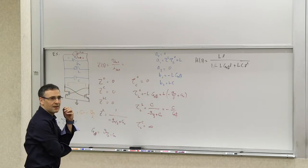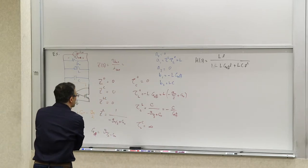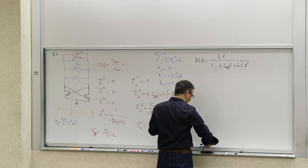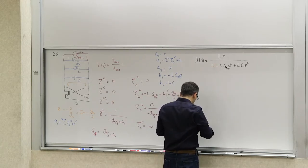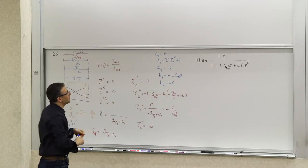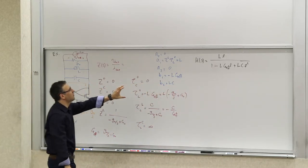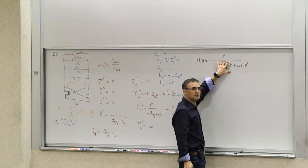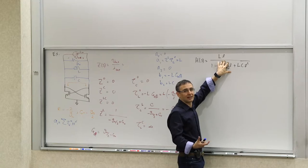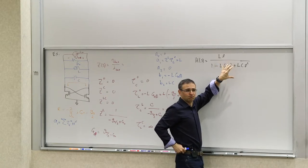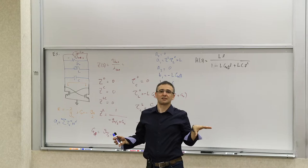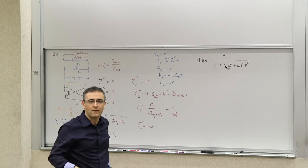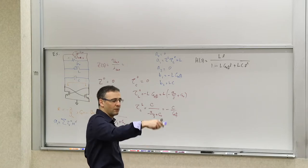What does this tell us? If that middle term were not there, you'd have LC in the denominator — a lossless resonator, like an ideal LC tank. If you put energy in, it keeps going forever.